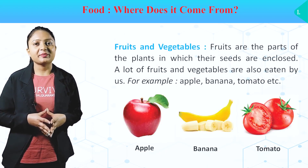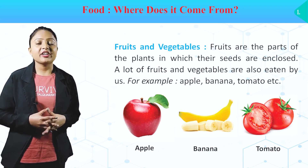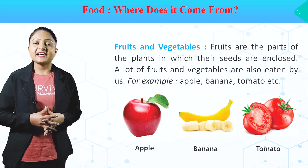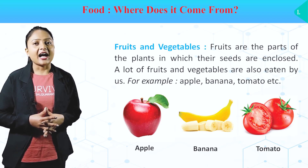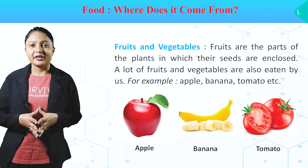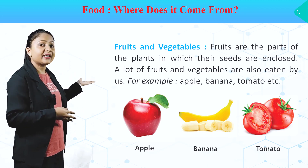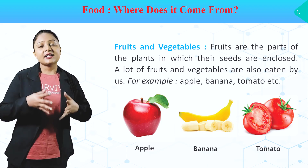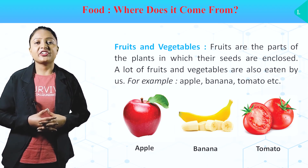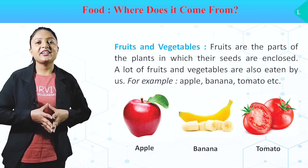Fruits and vegetables. Fruits are the parts of the plant in which their seeds are enclosed. A lot of fruits and vegetables are also eaten by us. For example, apple, banana, tomato, etc. Or yeh pictures mein bhi diye huye hai — apples, banana, tomato. Toh hum plants ke fruit aur vegetables ko bhi khate hai, jiske andar unka seed hota hai.